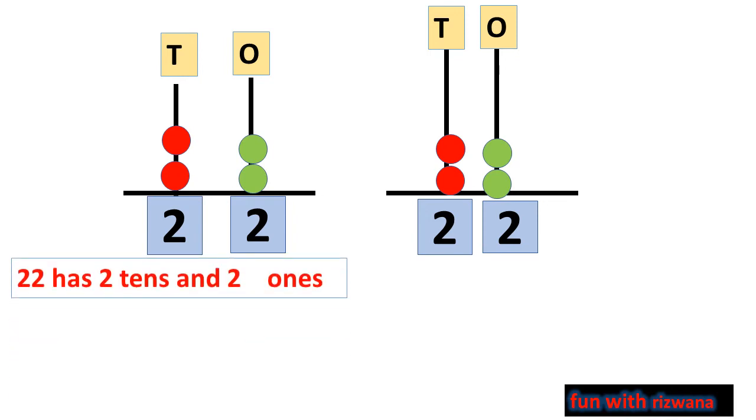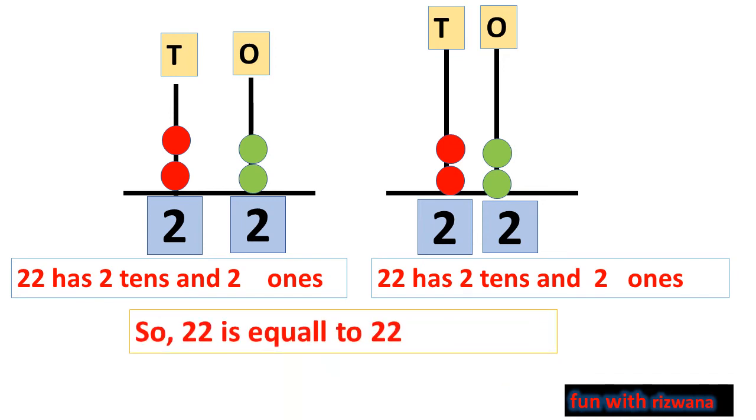So, 22 has 2 tens and 2 ones. On the other hand, we again have 22 and it also has 2 tens and 2 ones. It means there is no any difference between two numbers. So, 22 is equal to 22. And we write it as 22 is equal to 22 in symbolic form.